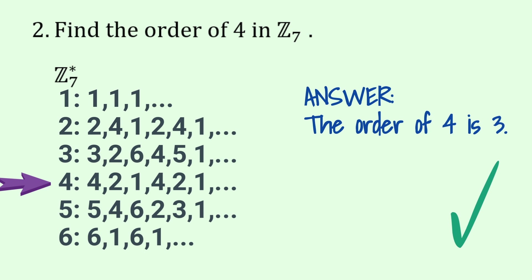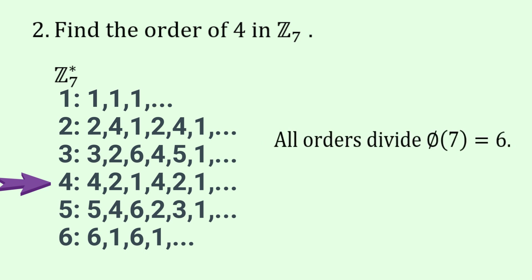Before I go on, if you look down and work out the orders here of all the various numbers, you can see that you'll get an order of 1 or 2 or 3 or 6. And the observation is that all orders divide 6, which is equal to 7 minus 1. But more particularly it equals phi of 7.